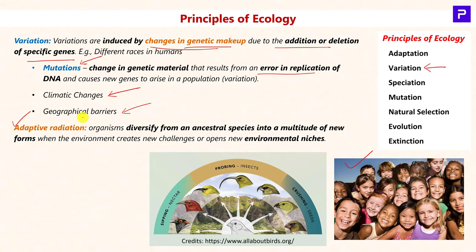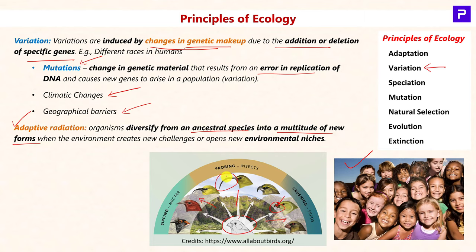We also have adaptive radiation, where a single ancestral species diversifies into a multitude of new forms to overcome various environmental challenges in a new habitat or ecological niche. For example, an ancestral bird species radiates into new forms with different morphological features — birds whose nutrition is mostly nuts and seeds develop shorter, stronger beaks to crack them, while birds that probe for insects through thick thickets develop long beaks.